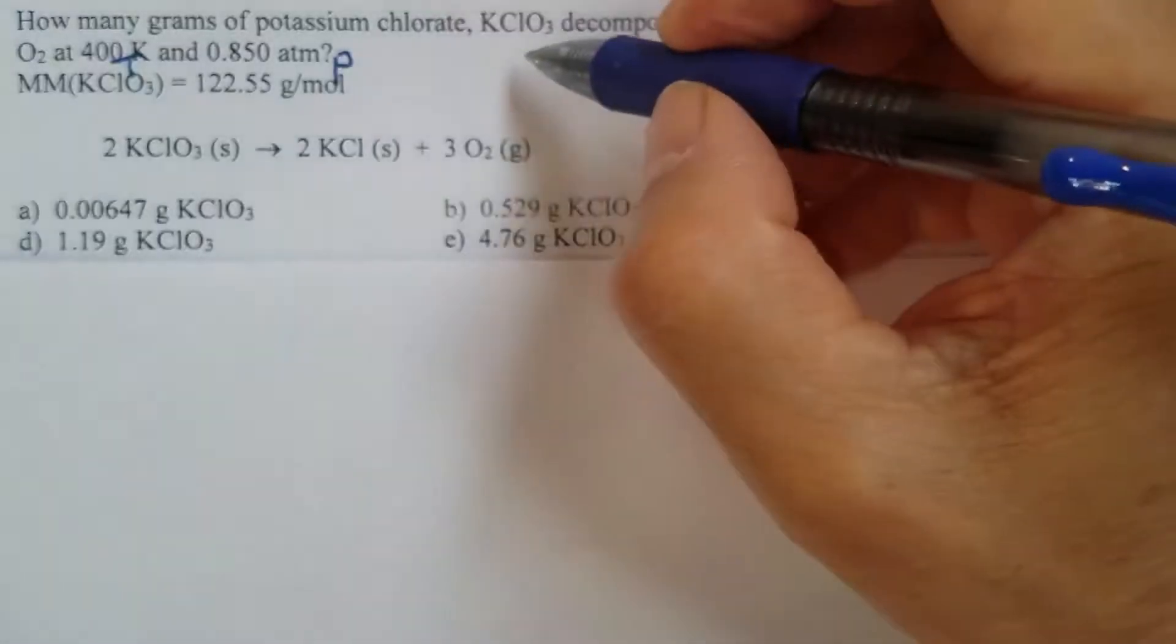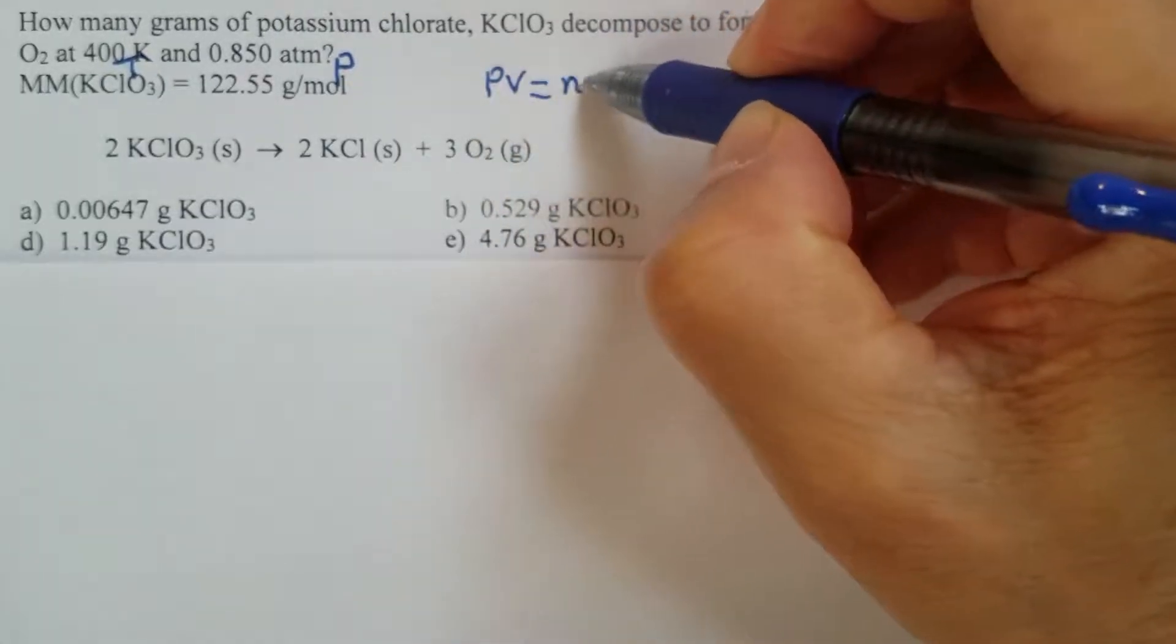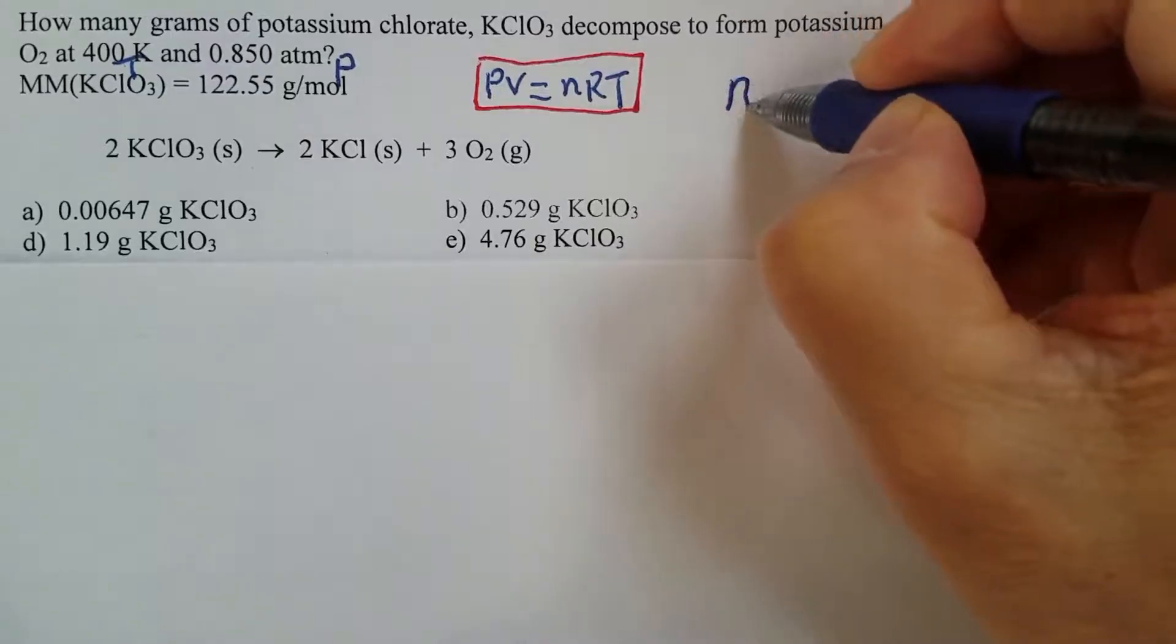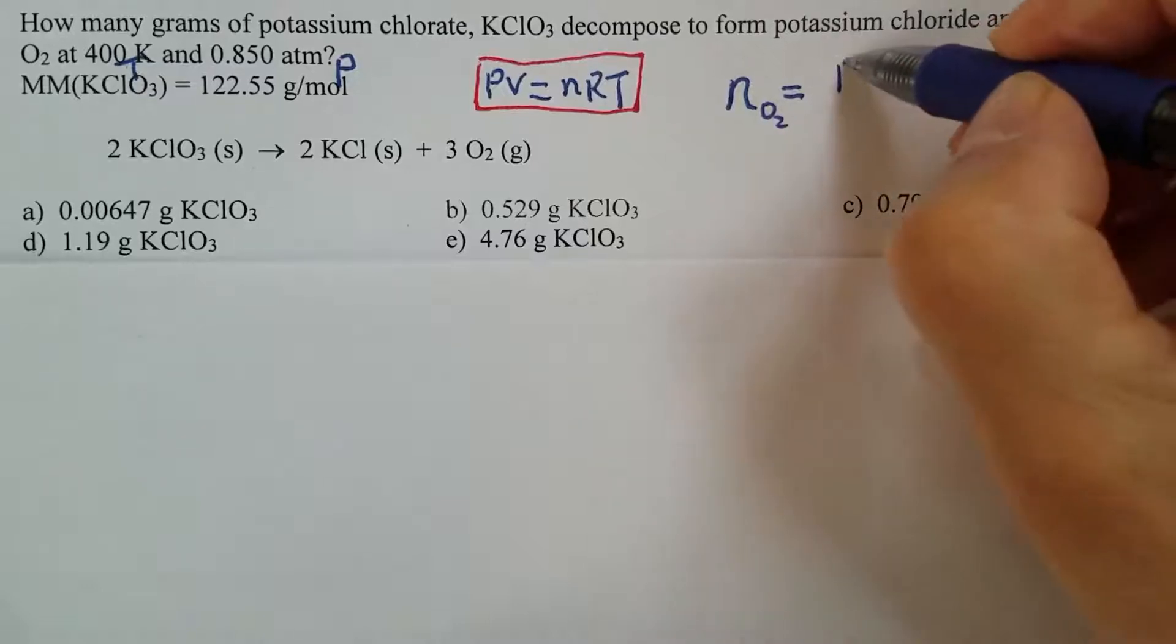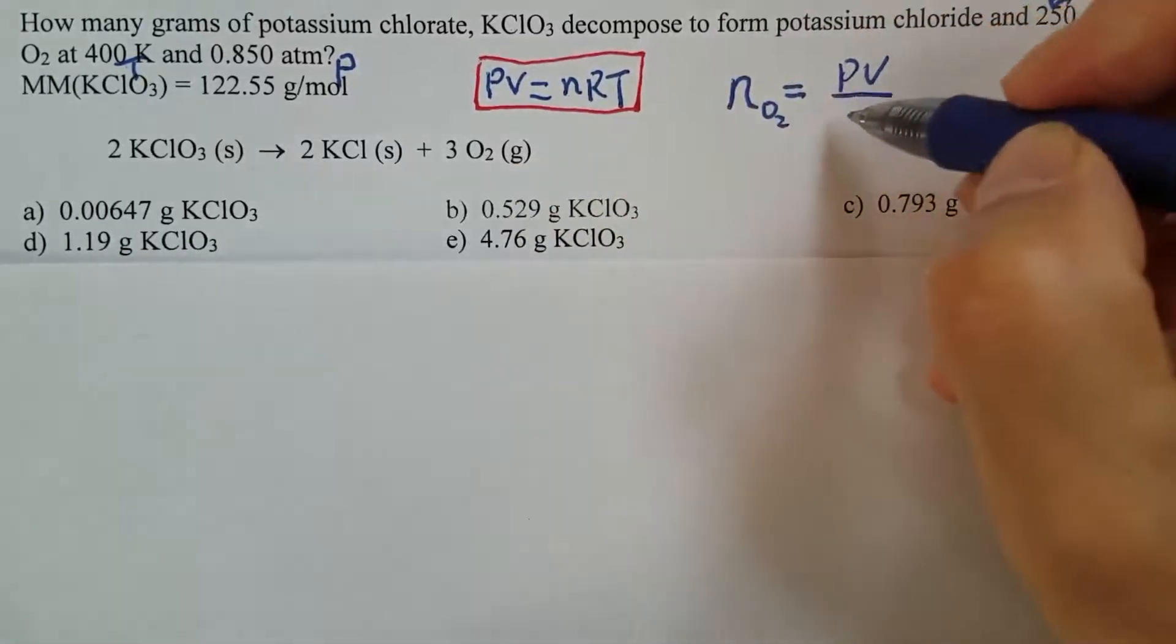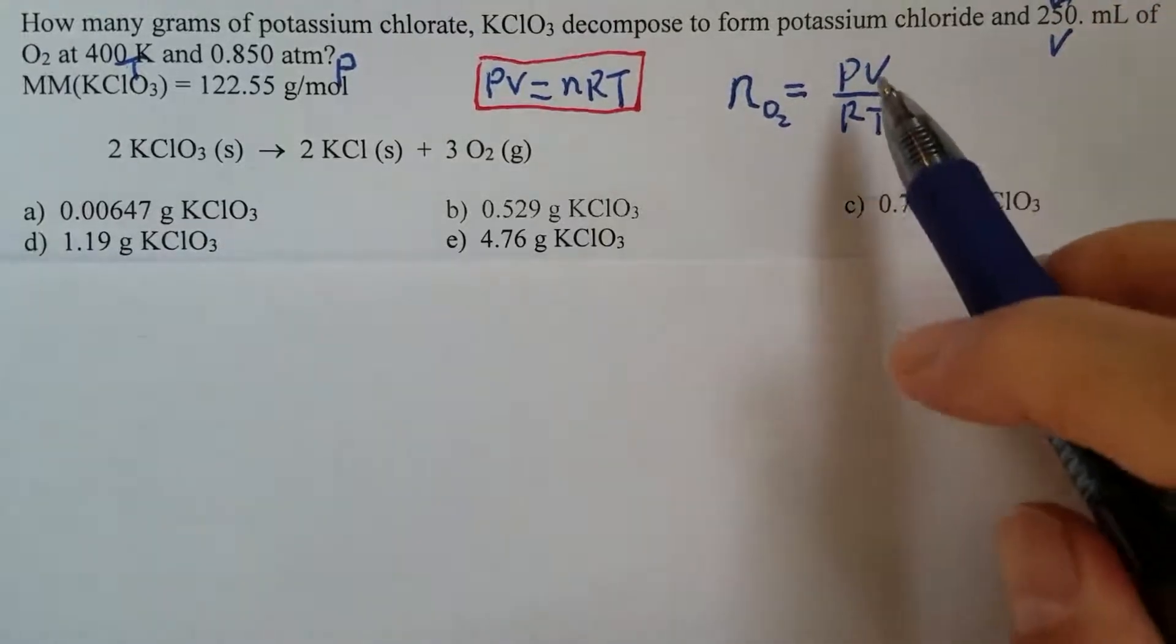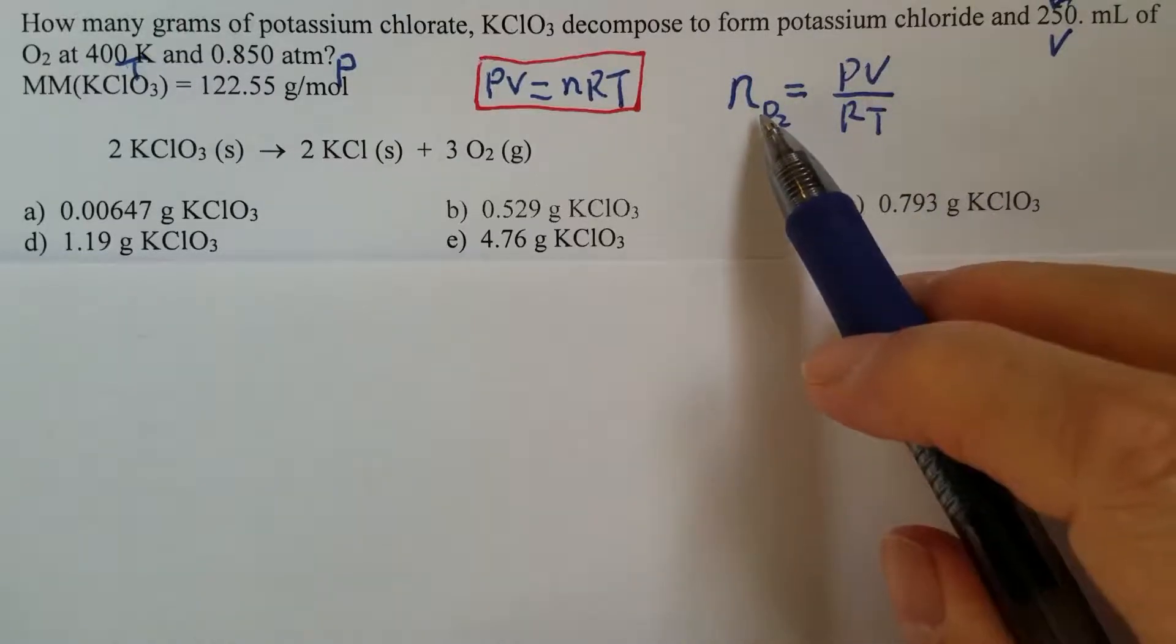From the key equation of ideal gas law, PV equals nRT, we should be able to write down the number of moles for oxygen. We keep PV on one side, then move the RT to the other side as denominator. Now we have all the information we need to calculate the number of moles.